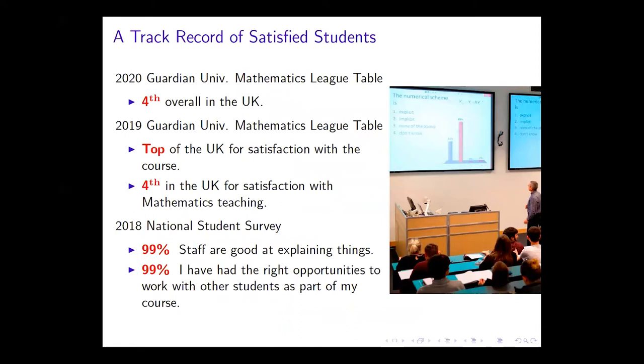If you look in the 2020 Guardian University of Mathematics League table, Plymouth is fourth in the UK. This is not a one-off. If you look at the 2019 table, we were top of the UK for satisfaction with the course and fourth in the UK for satisfaction with mathematics teaching.